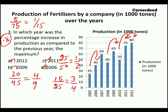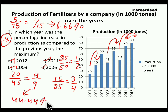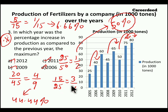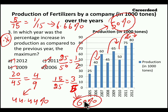You don't need to multiply by 100 if you know the percentage equivalent fractions. 1 by 15 is approximately 6.66%. 4 by 9 is 4 into 11.11%, which gives 44.44%. 1 by 2 is 50%. And 3 by 5 — since 1 by 5 is 20%, 3 by 5 is 60%. So 60% is the highest value, which belongs to 2006. So in 2006, the percentage increase in production compared to the previous year was maximum.